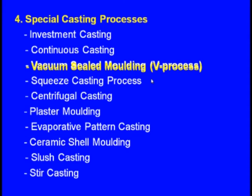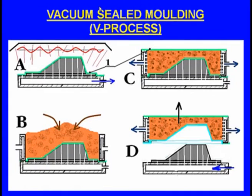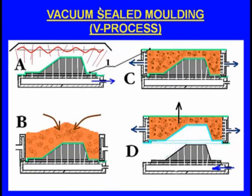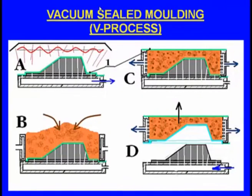Next, let us see the vacuum sealed moulding process, also known as V process, which was recently developed in Japan. The principle is that vacuum is used to bind and hold the moulding sand — unlike green sand moulding where binders and moisture are mixed in. Here, no clay or binder is used; no moisture either. We use fine, dry sand, and vacuum holds it together.